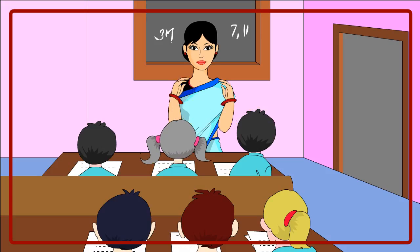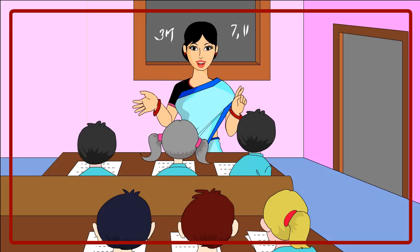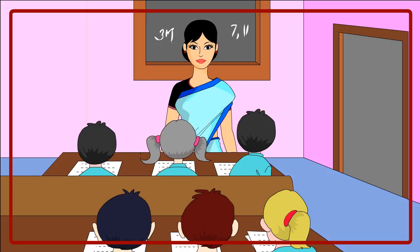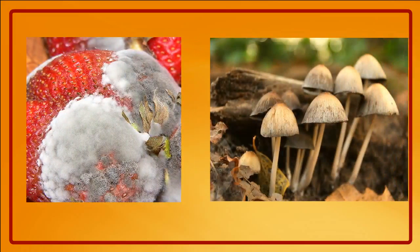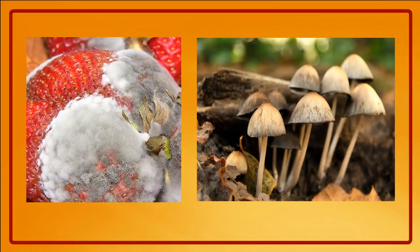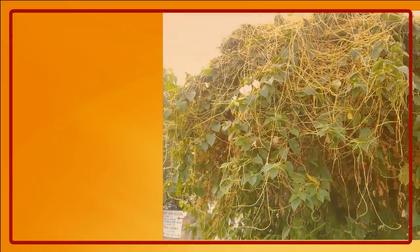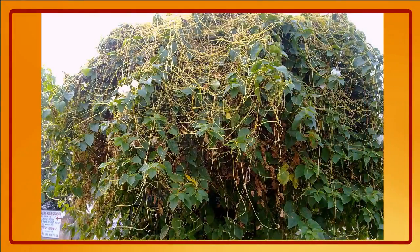Children, can all plants make their own food? No, non-green plants cannot make their own food. Moulds and mushrooms obtain food from dead and decaying matter present in the soil. Doda or Amarbeil is a parasitic plant with only a stem. It obtains food by twining itself around the stem of another plant and sucks water and minerals from it.